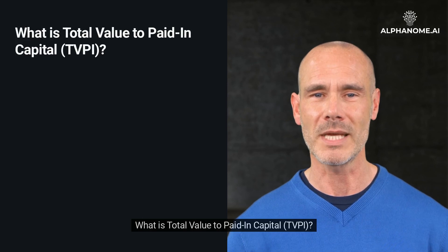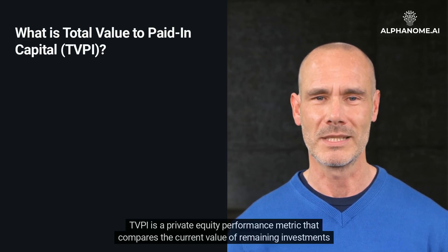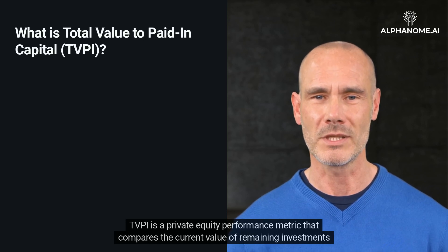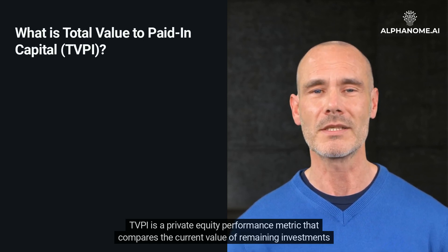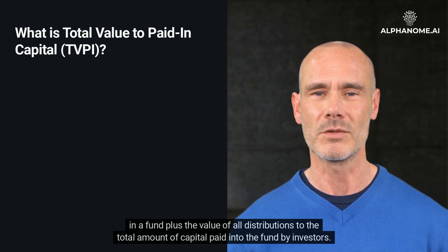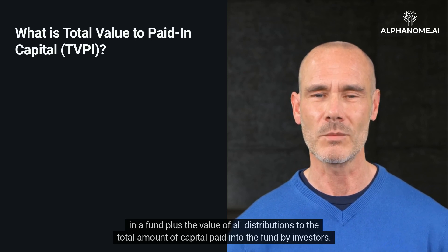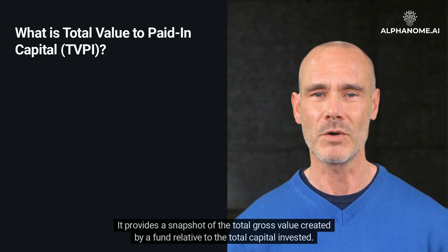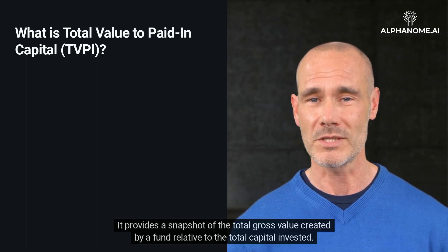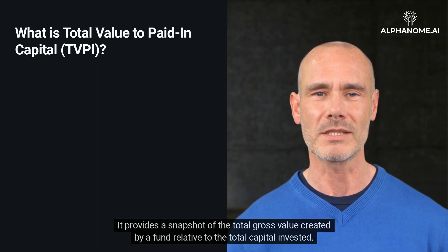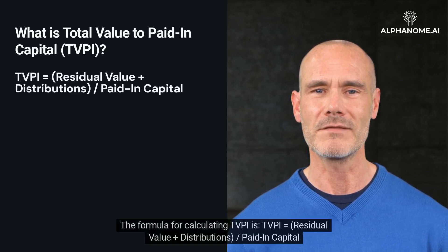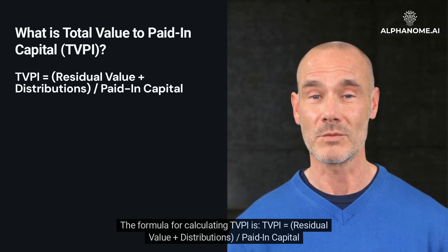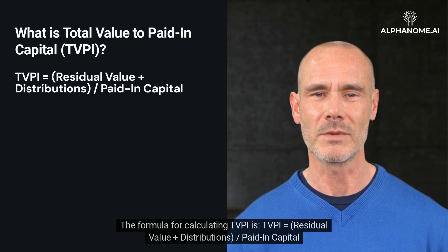What is Total Value to Paid-in Capital, TVPI? TVPI is a private equity performance metric that compares the current value of remaining investments in a fund plus the value of all distributions to the total amount of capital paid into the fund by investors. It provides a snapshot of the total gross value created by a fund relative to the total capital invested. The formula for calculating TVPI is: TVPI equals residual value plus distributions, divided by paid-in capital.